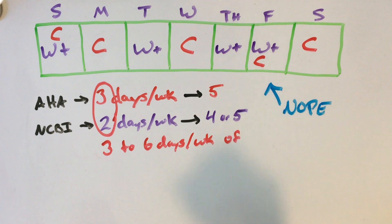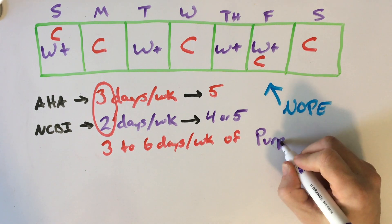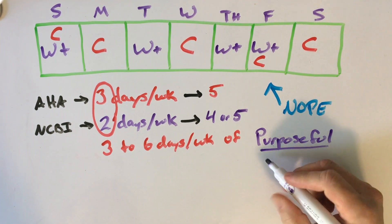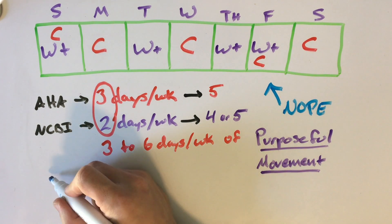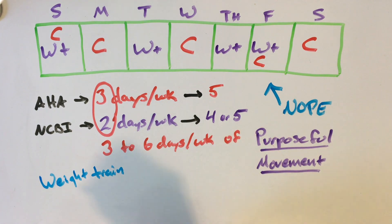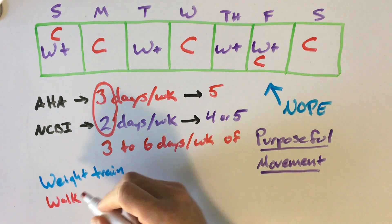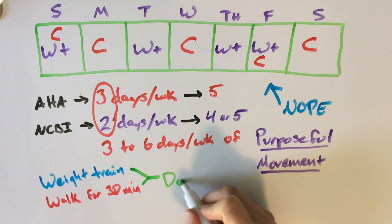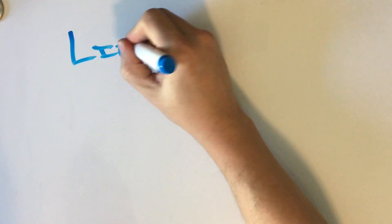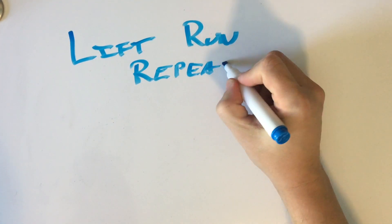We're going to go back to their base recommendations. And we're just going to keep doing it over and over again. So we're going to do three to six days a week of purposeful movement. And what that looks like then is going to be you're going to weight train on one day. And then the next day you're going to walk for 30 minutes. And then you're going to just do that again. Or you're going to lift, run, and repeat.